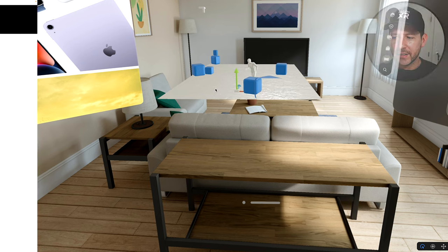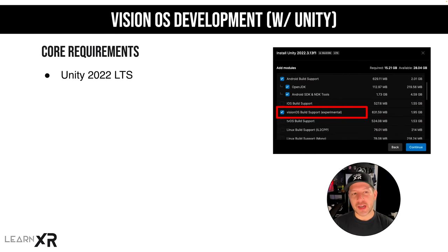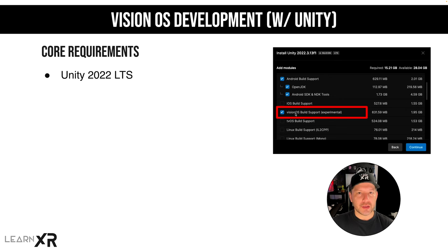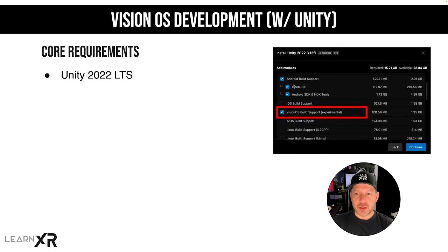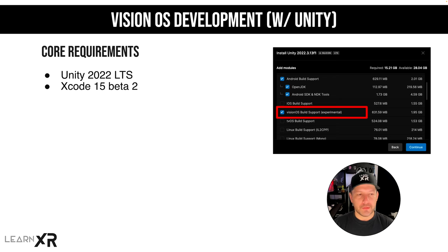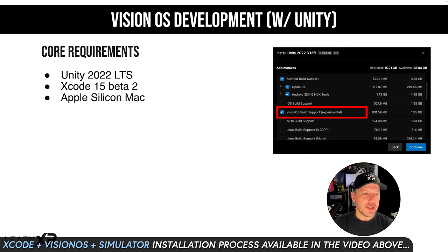As far as the core requirements, you're going to need Unity 2022 LTS. The component you'll have to install is the VisionOS build support, which is currently labeled as experimental. Once you get that going, you'll be able to build fully immersive experiences. You'll also need a PolySpatial plugin, which I'll walk you through. Android build support is optional — that's just because I do Quest 3 and Quest 2 development. For this video you'll also need Xcode 15 Beta 2 or greater, which you can get from the developer portal.